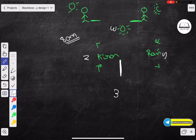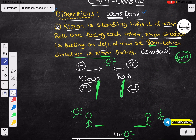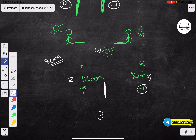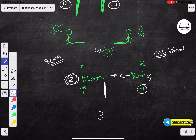If Ravi is right, then which direction is Ravi facing? Ravi is right. Kiran is right, Suriya is right. The answer is North. Very very simple. I am not confused. I will assume that you are right. Suriya is in the East.